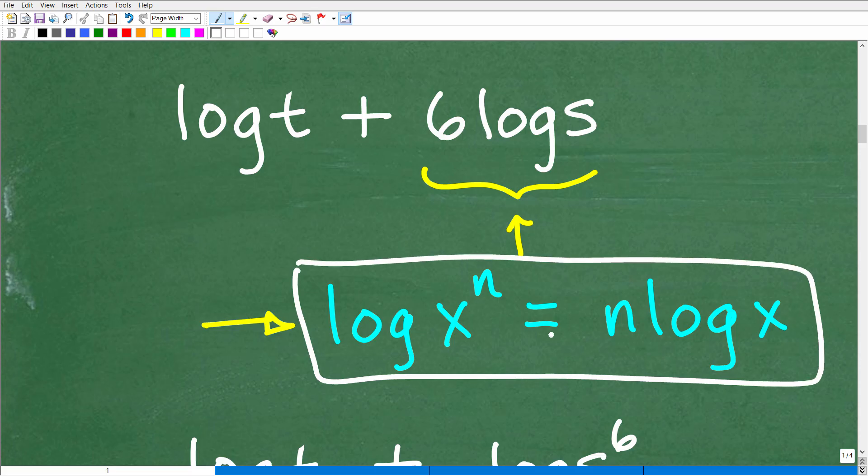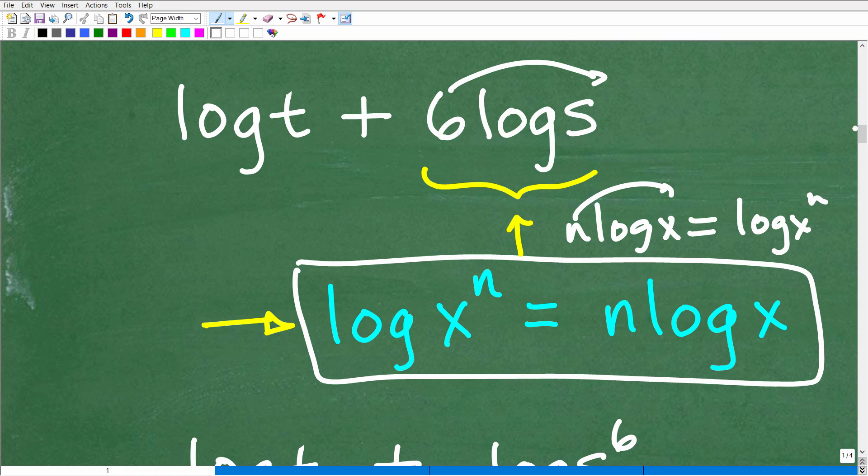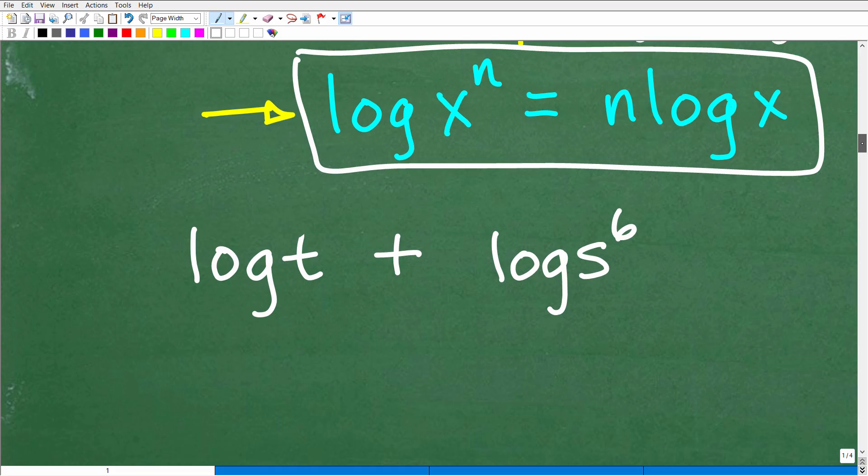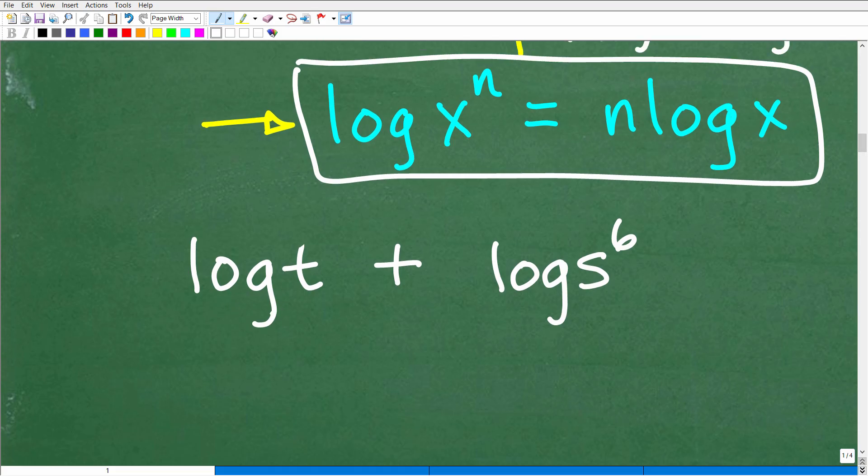So what we're going to be thinking about is this property of logarithms right here. So log X to the N is equal to N log X. Or we can just reverse this: N log X is equal to log X to the N. So one is equal to another. So we're just going to scoot this 6 up there as the exponent to the base S. So now we have log T plus log S to the 6.